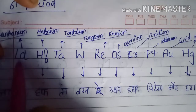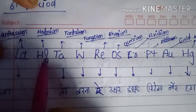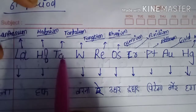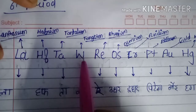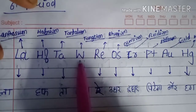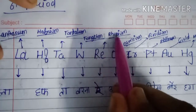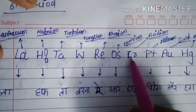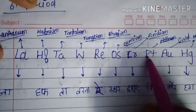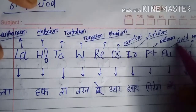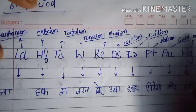The sixth period d-block elements are: La — Lanthanum, Hf — Hafnium, Ta — Tantalum, W — Tungsten, Re — Rhenium, Os — Osmium, Ir — Iridium, Pt — Platinum, Au — Gold, Hg — Mercury.